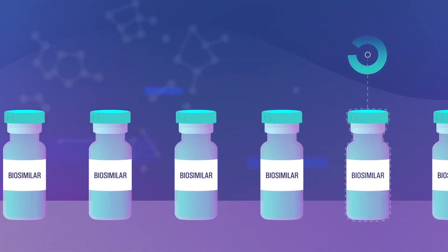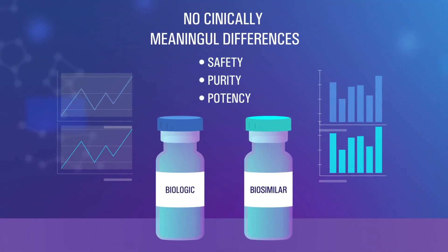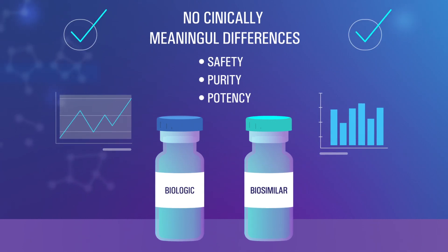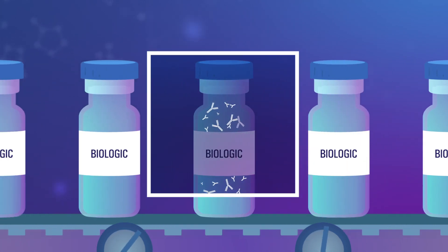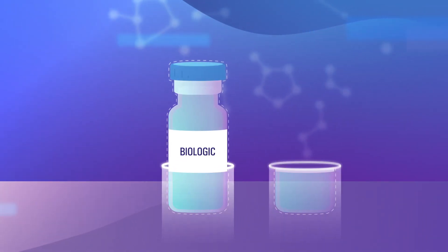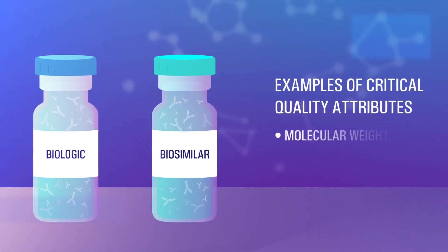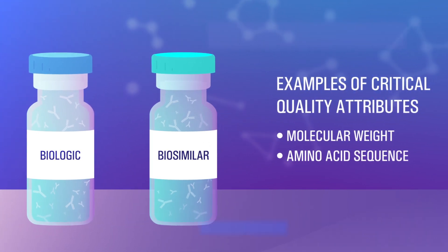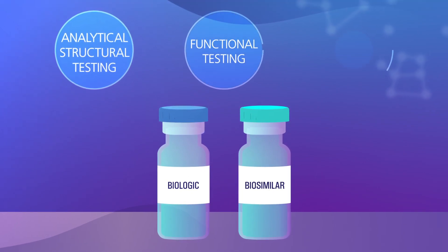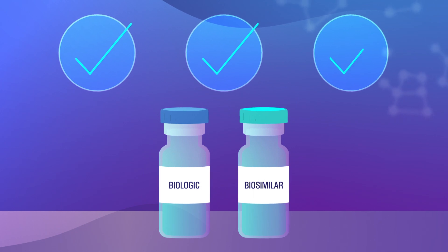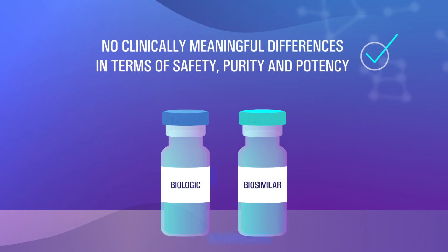The biosimilar development process has many similarities. The biosimilar must show no clinically meaningful differences to the reference biologic through a multifaceted approach, which begins with analyzing batches of the reference biologic for its critical quality attributes. These are used to develop a biosimilar that is highly similar to the reference biologic. Like the reference biologic, the biosimilar must also compare against the CQAs from the reference biologic batches. Analytical structural testing and functional and clinical testing are used to validate that the biosimilars and reference biologics have no clinically meaningful differences in terms of safety, purity, and potency.